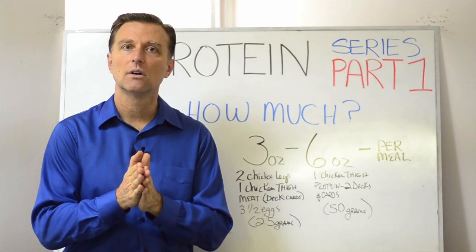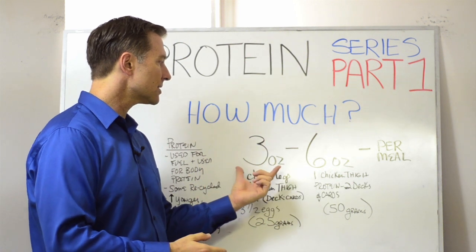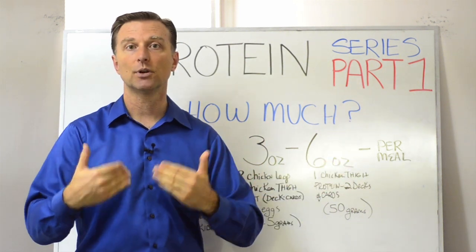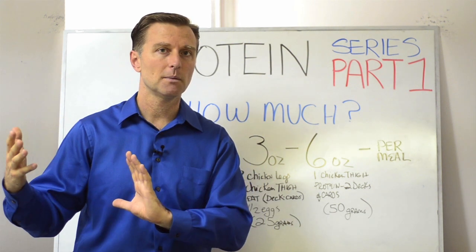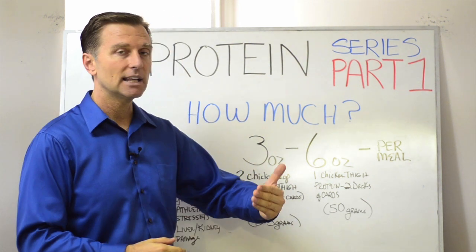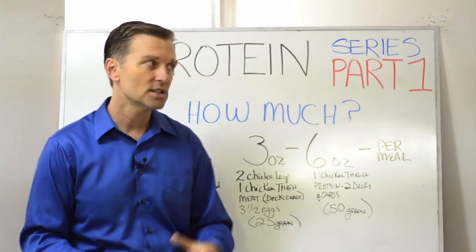Now, this is a very general answer, but typically, most people need between three ounces and six ounces of protein per meal. If you have kidney problems or liver problems, you're going to need less. If you're an athlete, younger, or going through a lot of stress, you're going to need a little bit more. So this is an average.